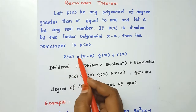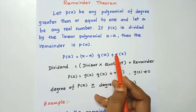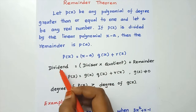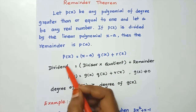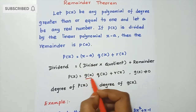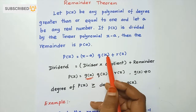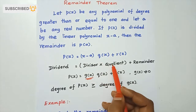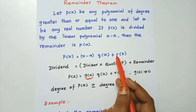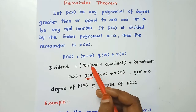p of x equals x minus a into q of x plus r of x. Here q of x equals the quotient and r is the remainder. Now we have the division algorithm.